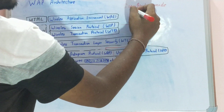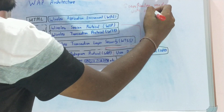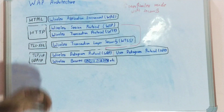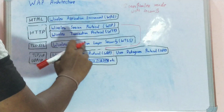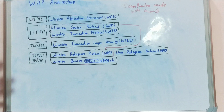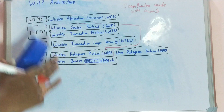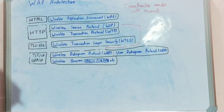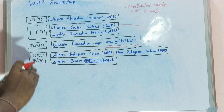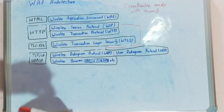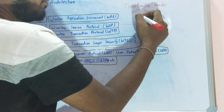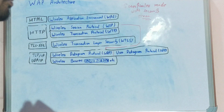The second mode is connectionless mode with security. In this, we try to provide security to the data being sent online. For this, we include the Wireless Transaction Layer Security layer. Because this layer is included, errors in data can be verified when data is transmitted from mobile to worldwide web and back — but errors cannot be rectified and lost packets cannot be re-transmitted, since Wireless Transaction Protocol is still not used. It helps in detecting errors but you can't rectify those errors.